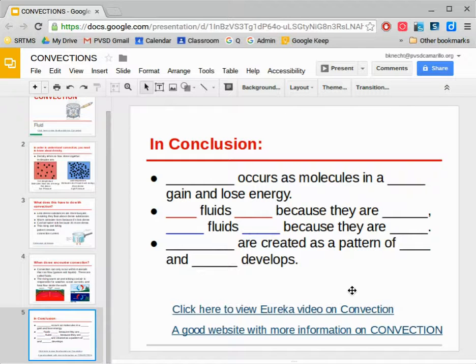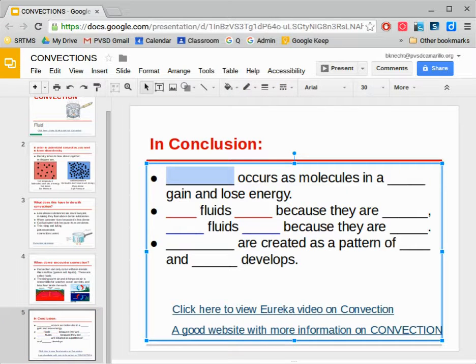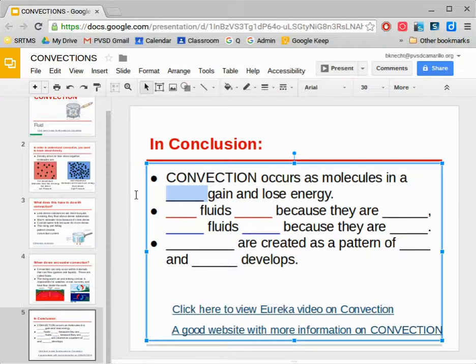Alright, so to wrap up this whole topic of convection, let's look at the most important things you always need to remember about convection. First of all, convection occurs as molecules in—what kind of thing can convection happen in? Only in a fluid, as they gain energy and lose energy.